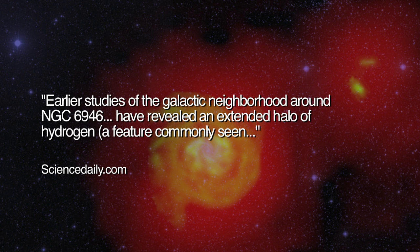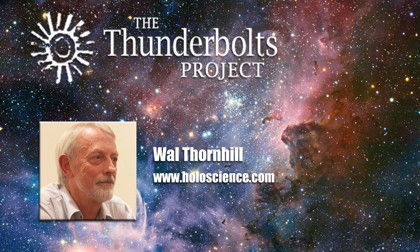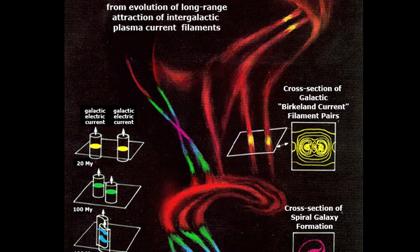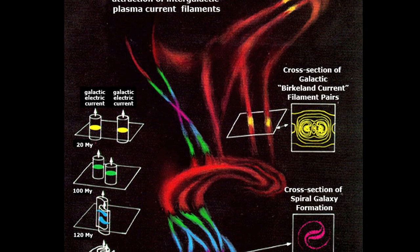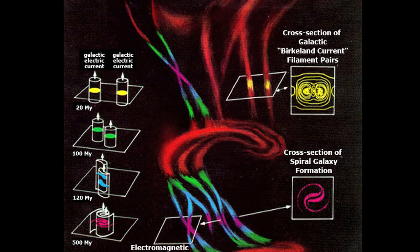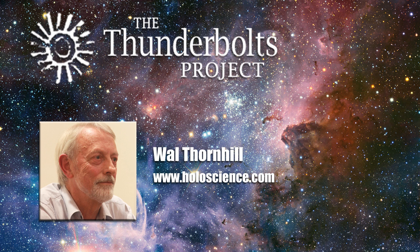Earlier studies of the galactic neighborhood around NGC 6946 have revealed an extended halo of hydrogen, a feature commonly seen in spiral galaxies which may be formed by hydrogen ejected from the disk of the galaxy by intense star formation and supernova explosions. Here again we have this problem of the only acting mechanisms are all mechanical explosions and gravity bringing things together. Plasma cosmologists have shown that the coming together of these intergalactic current filaments to form a spiral galaxy will actually draw neutral hydrogen into a sump at the center of the galaxy, but that comes from an extended halo of neutral hydrogen which is drawn in by forces which are greater than gravity.